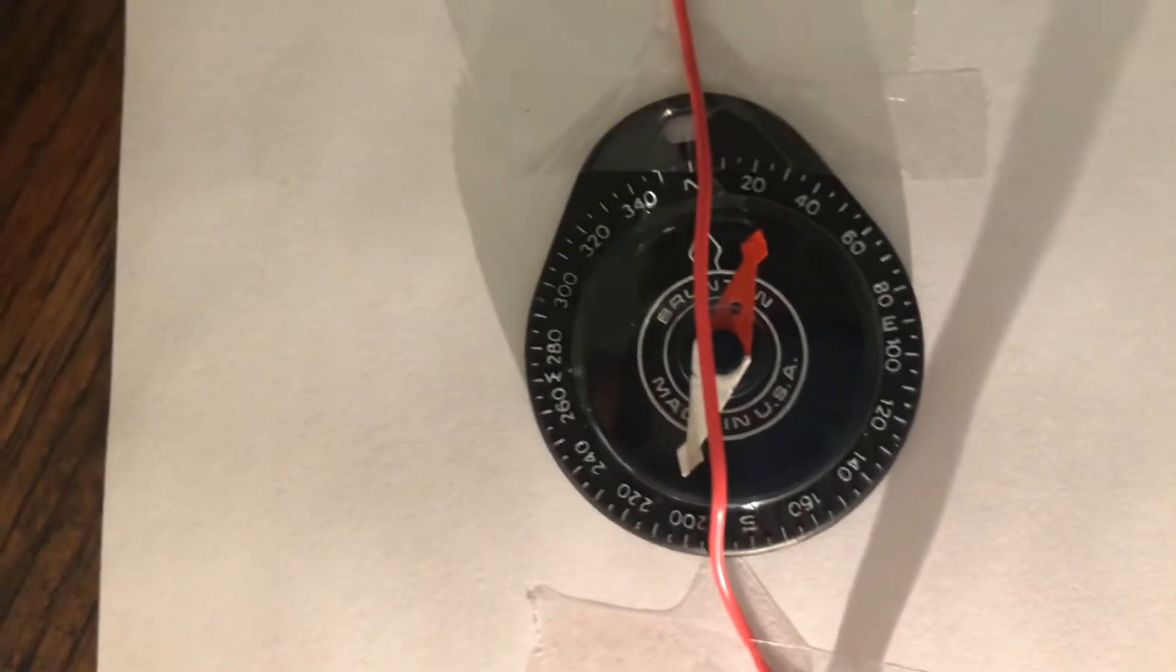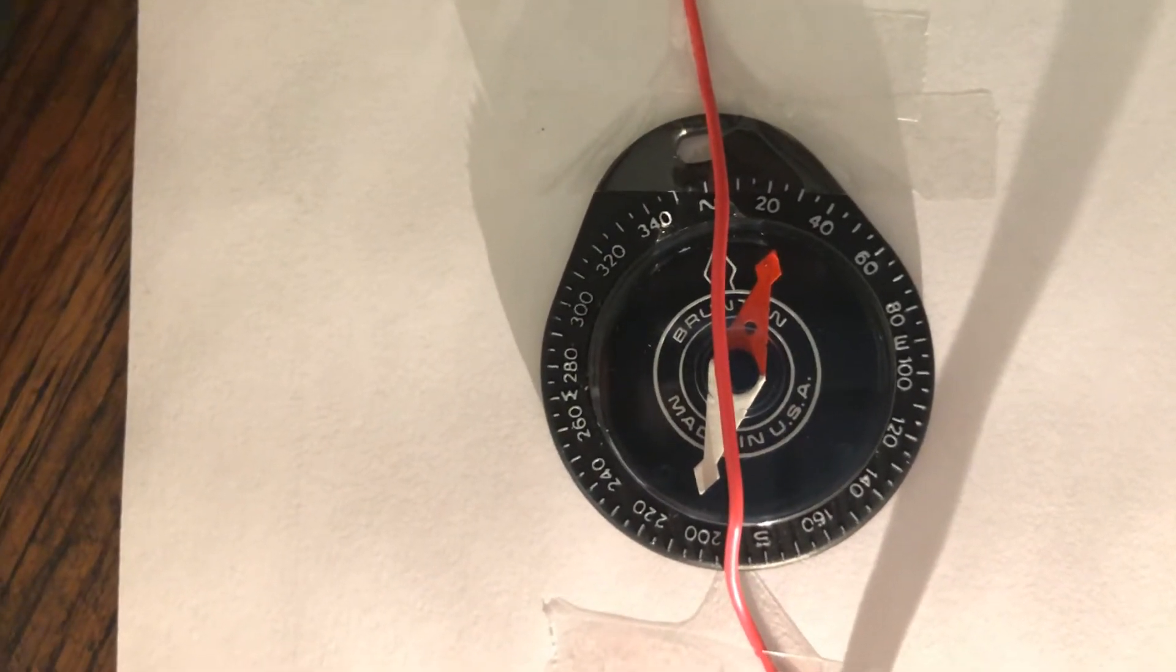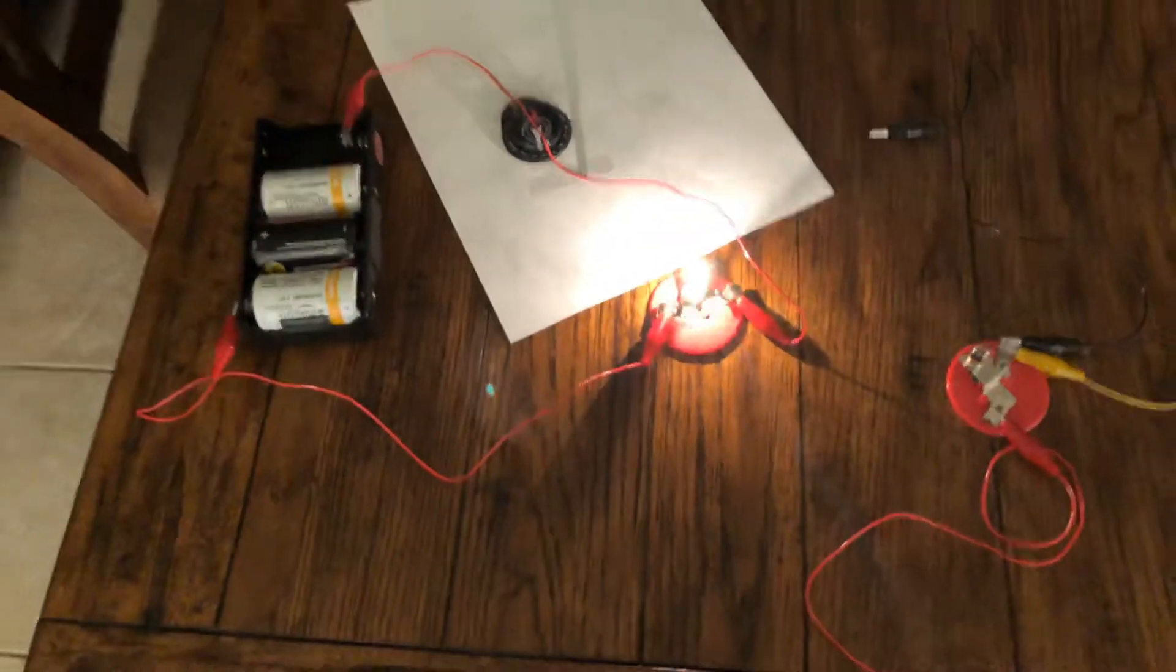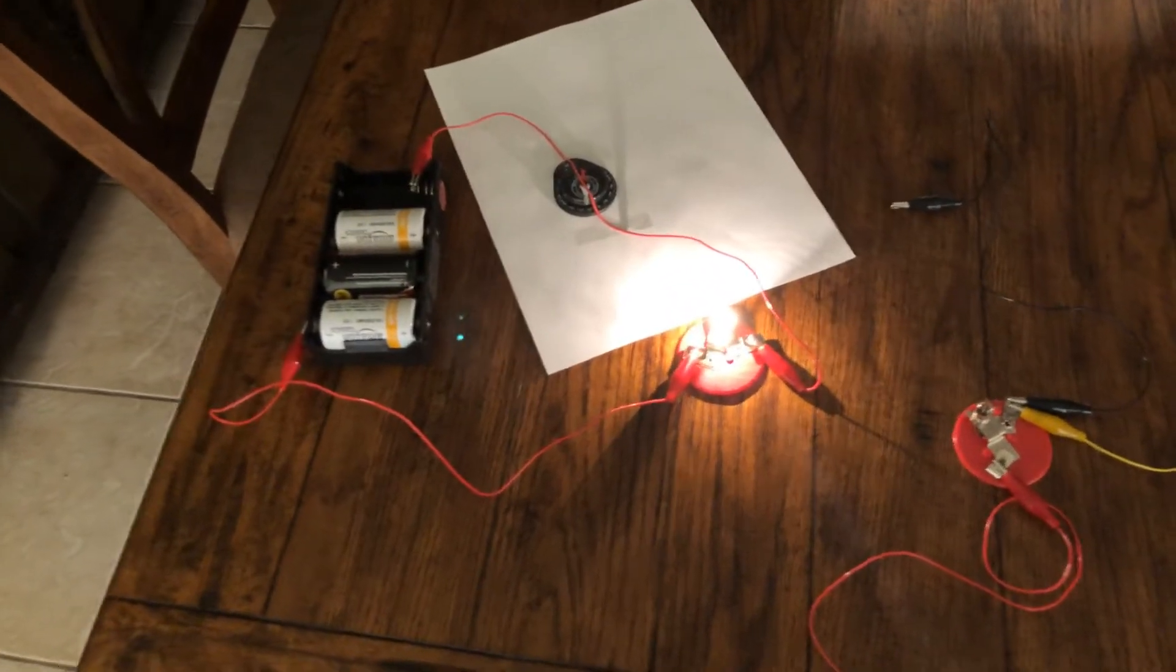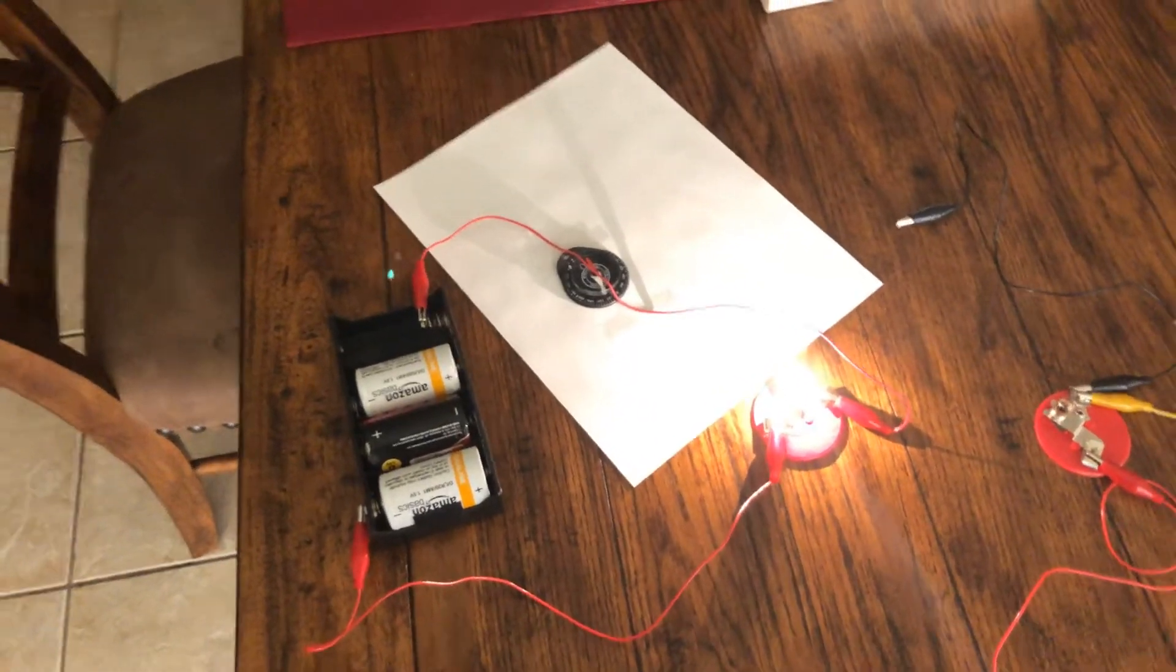You see my bulb is pretty bright, and also importantly, you see that my compass is deflected at about 30 degrees, which is pretty far. I've only got the one bulb there, so a lot of charge can flow through. The total resistance of this circuit is pretty small.